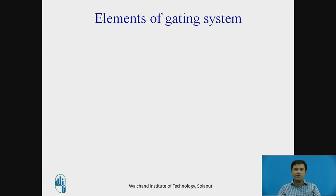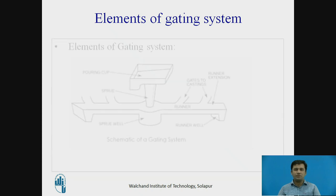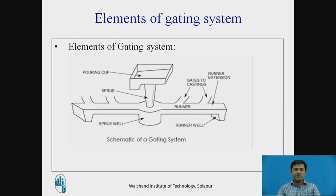Now we'll look at the different elements of the gating system. Looking at this figure, the first element is the pouring cup — this is where the molten metal first enters into the system to make the casting. Second, immediately under the pouring cup, is the sprue, which connects the pouring cup with the sprue well. The design of the sprue helps reduce defects like erosion.